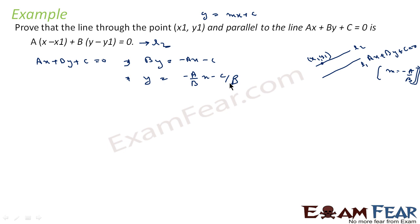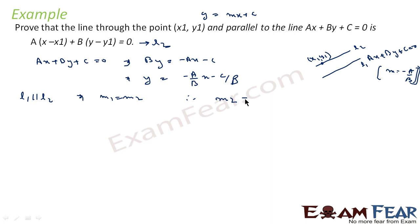So M equals minus A by B is the slope of line L1. Since L1 is parallel to L2, we can say M1 equals M2 — both lines are parallel so their slopes are equal. Therefore, the slope of line L2, that is M2, is also equal to minus A by B. Now for line L2, we have the slope and we have the point, so we can formulate the equation.